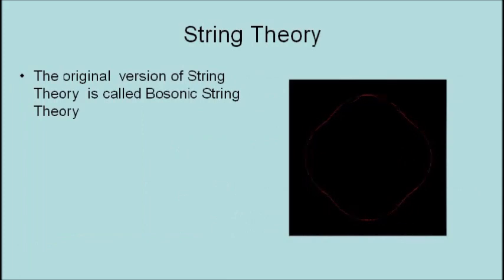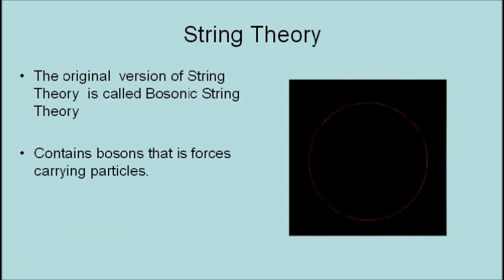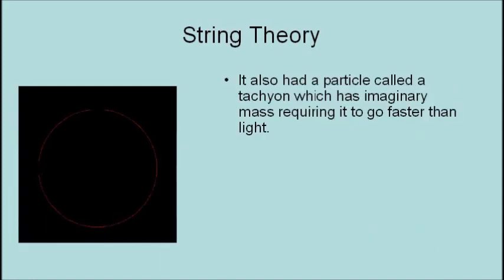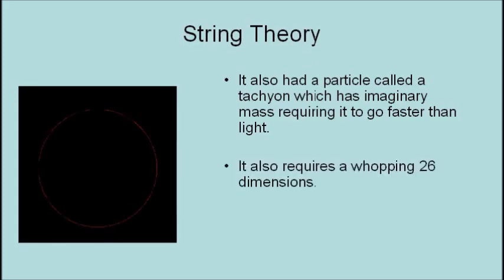The original version of string theory is called bosonic string theory, because it contains only bosons - that is, force-carrying particles. It lacks fermions, which are the particles of matter. It also has a particle called a tachyon, which has imaginary mass requiring it to go faster than the speed of light. It also has a whopping 26 dimensions.